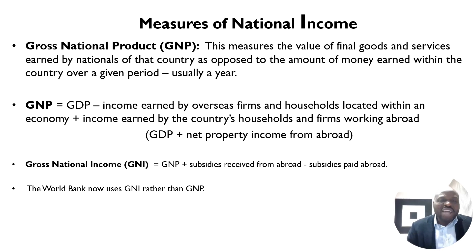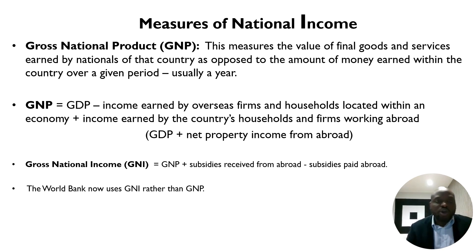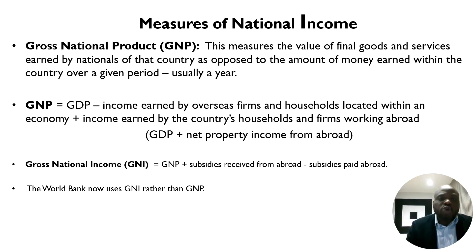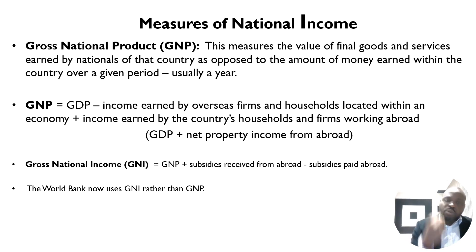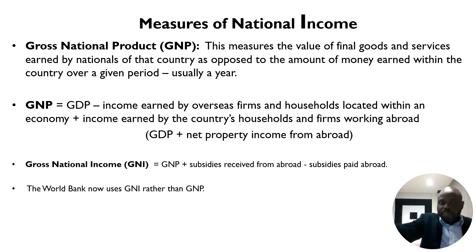GNP is calculated as: GDP minus income earned by overseas firms and households located within the economy, plus income earned by the country's households and firms working abroad — essentially GDP plus net income from abroad. Gross National Income (GNI), used by the World Bank, equals GNP plus subsidies received from abroad minus subsidies paid abroad.